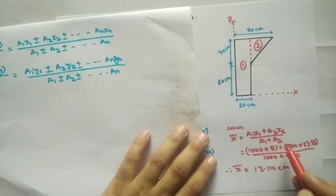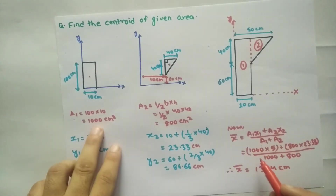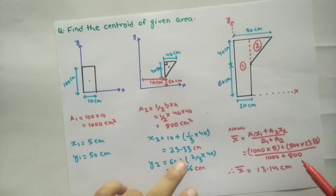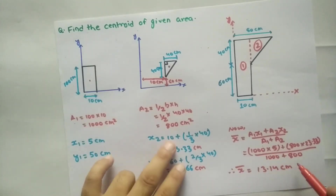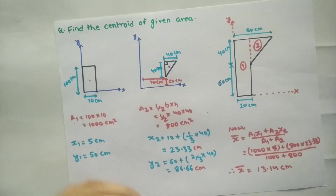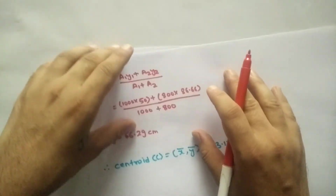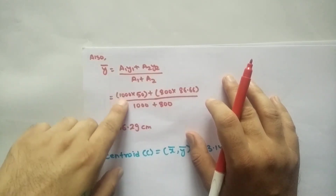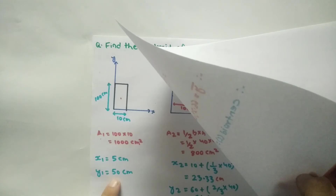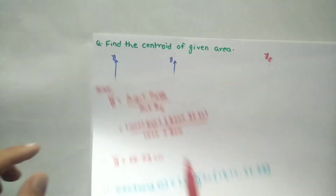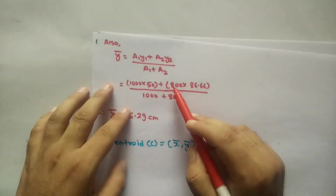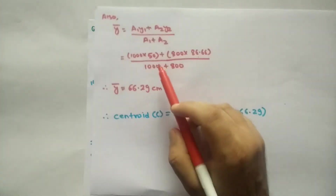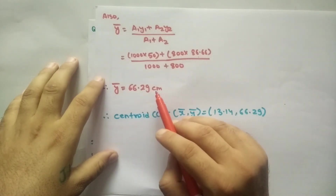Now, x-bar = (A1×X1 + A2×X2) / (A1 + A2). A1 = 1000, x1 = 5, A2 = 800, x2 = 23.33. So x-bar = (1000×5 + 800×23.33) / (1000 + 800) = 13.14 cm. And y-bar = (A1×Y1 + A2×Y2) / (A1 + A2) = (1000×50 + 800×86.66) / 1800 = 66.29 cm.